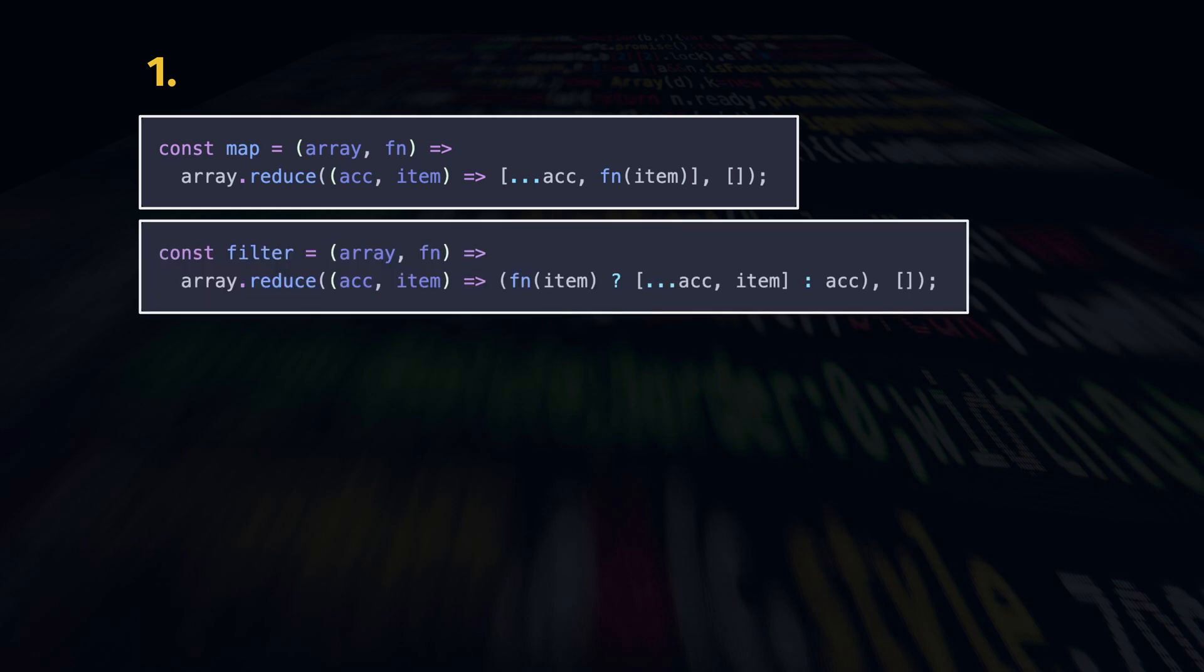Filter: start with an empty array, apply the predicate function to each element. If it's truthy, add the element to the result.